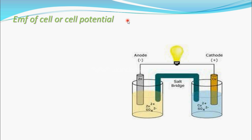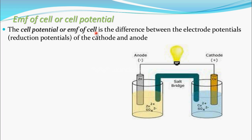Cell potential means potential difference. The cathode is at high potential and the anode is at low potential. This potential difference is called cell potential. The cell potential or EMF of the cell is the difference between the electrode potentials of the cathode and the anode, and these electrode potentials should be reduction potentials.